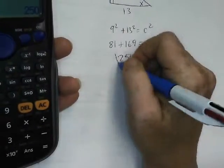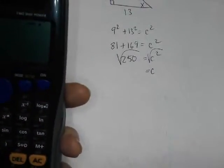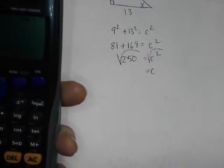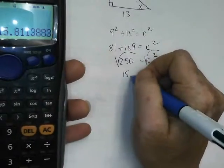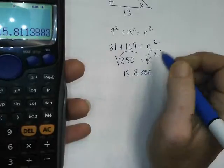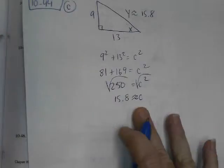Sorry, root of 250. What? You've got such nice friends. We've got 5 root 10, which is about 15.8, approximately. That's letter C.